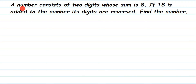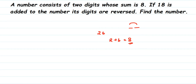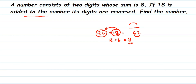Here's a question: a number consists of two digits whose sum is 8. If 18 is added to the number, its digits are reversed. Find the number. For example, suppose 26 is my number — if I add 18 to it, the number gets reversed, so 26 will become 62. I'm just giving an example to illustrate what 'digits reversed' means.